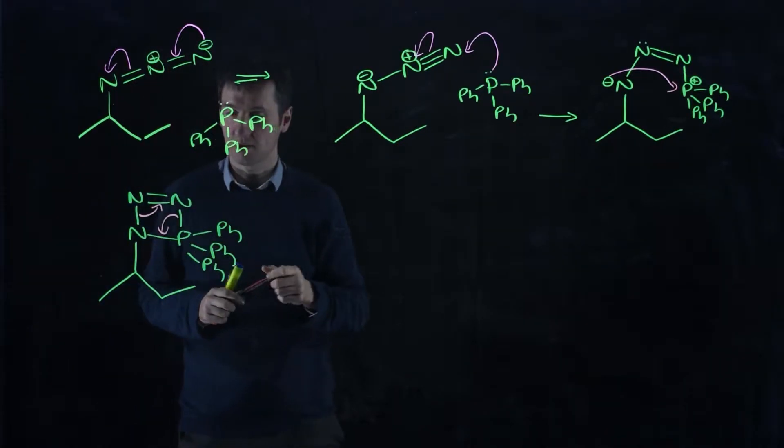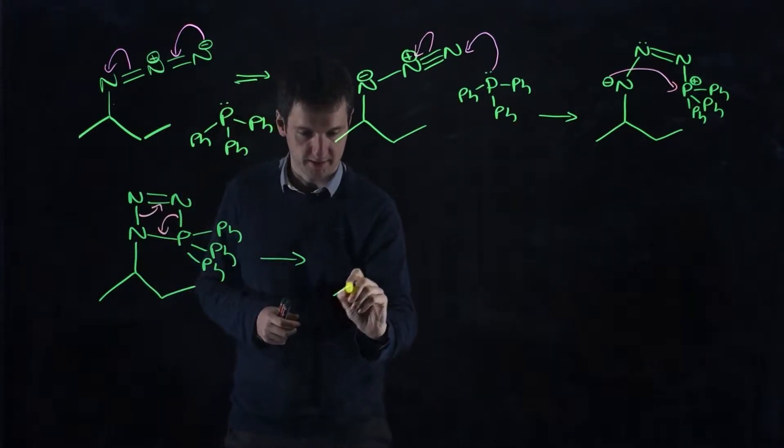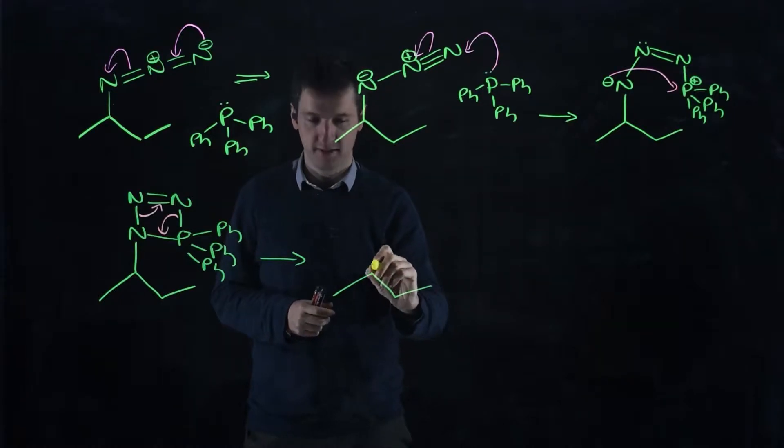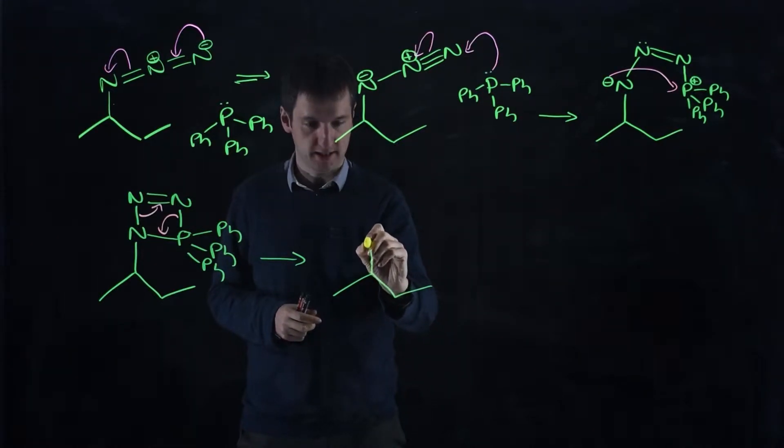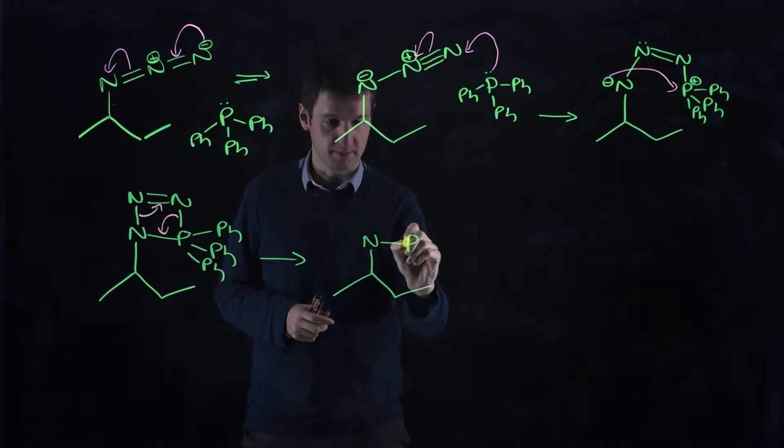And if we push those electrons around, what do we produce? And that step is most definitely going to be irreversible. It's favored by entropy and enthalpy. We've taken that nitrogen-phosphorus. That bond is still there.